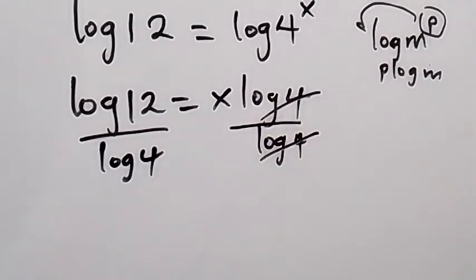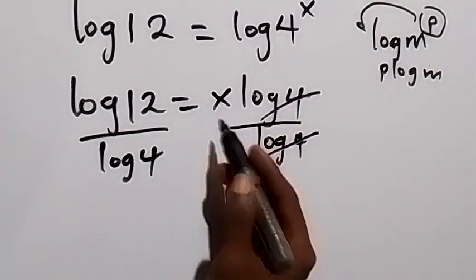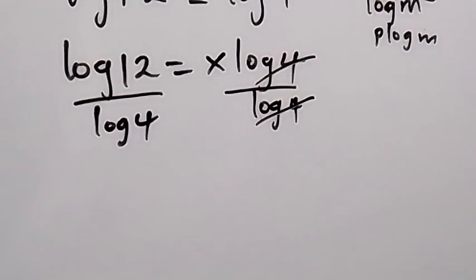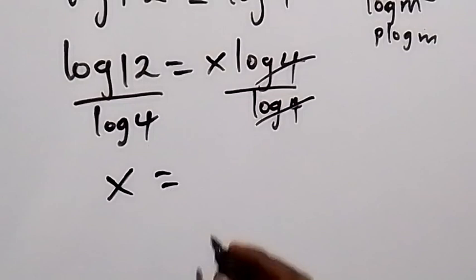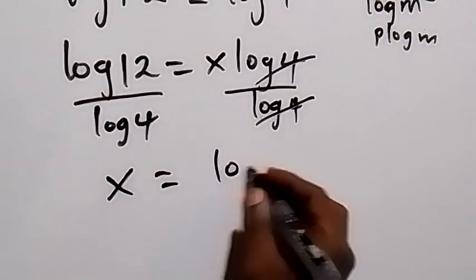Then log 4 will cancel log 4 on this side. So we can say x now is equal to log 12 over log 4, and log 12 can be written as log 4 times 3.